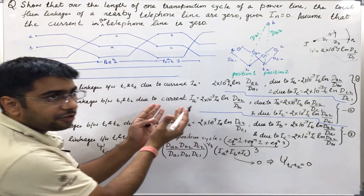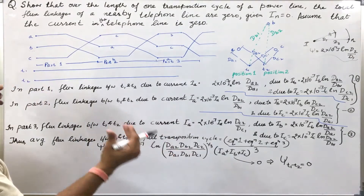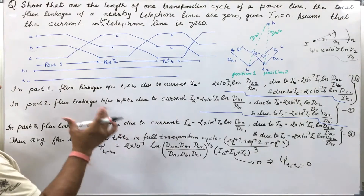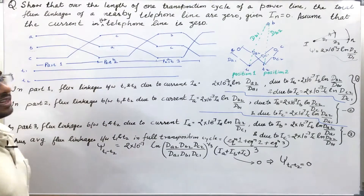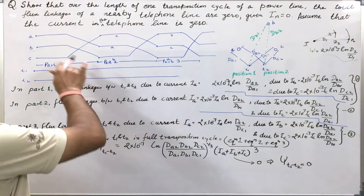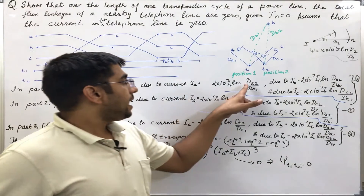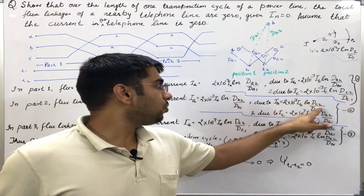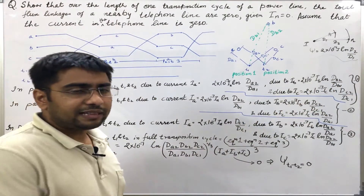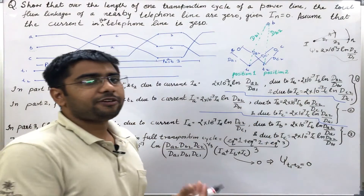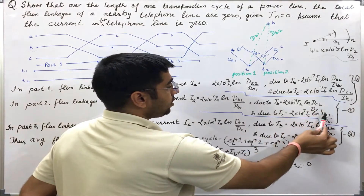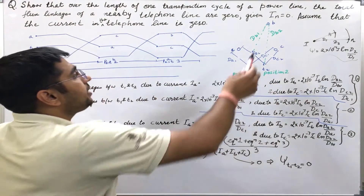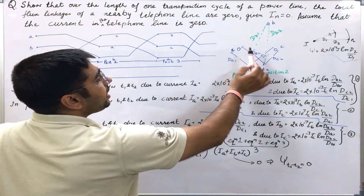Writing the similar expression for the flux linkage between conductors T1 and T2 for part 2 of the transposition cycle: conductor A will be occupying the same position which was occupied by conductor B in part 1, so dA2 changes to dB2 and dA1 changes to dB1. Similarly, dB2 changes to dC2 and dB1 changes to dC1 — just incrementing the variable name by 1. And dC2 will change to dA2, dC1 to dA1. I can verify this by making a similar diagram and changing the positions of A, B, and C.